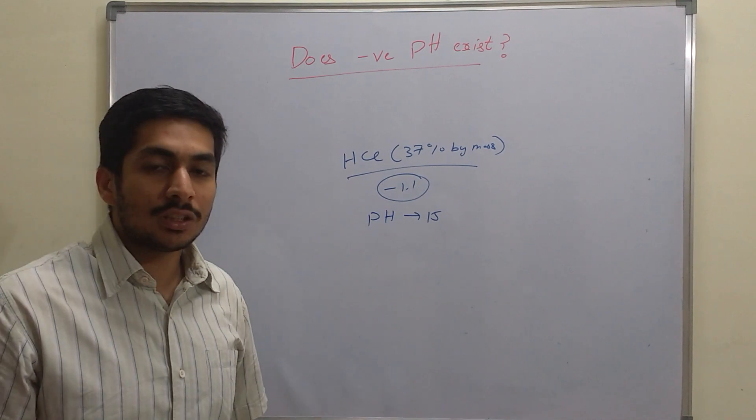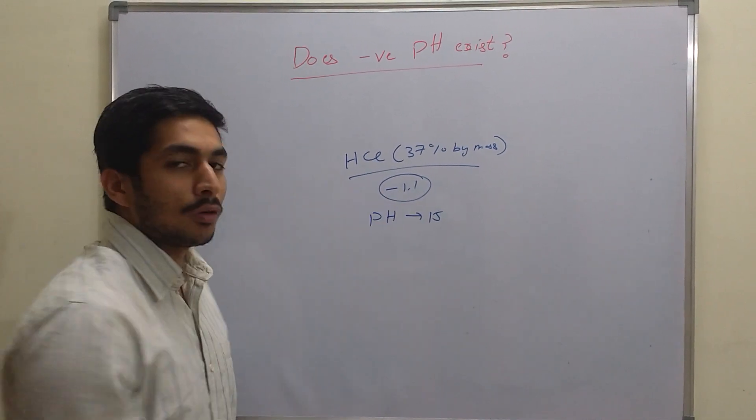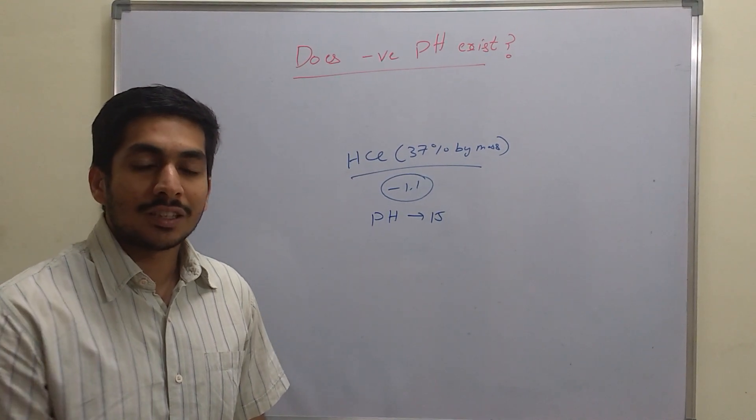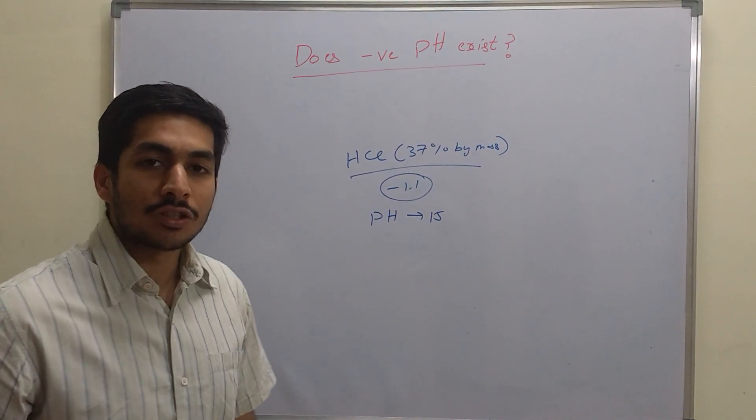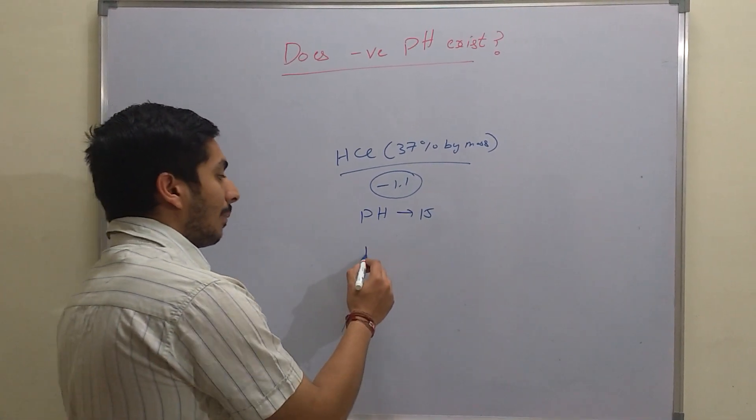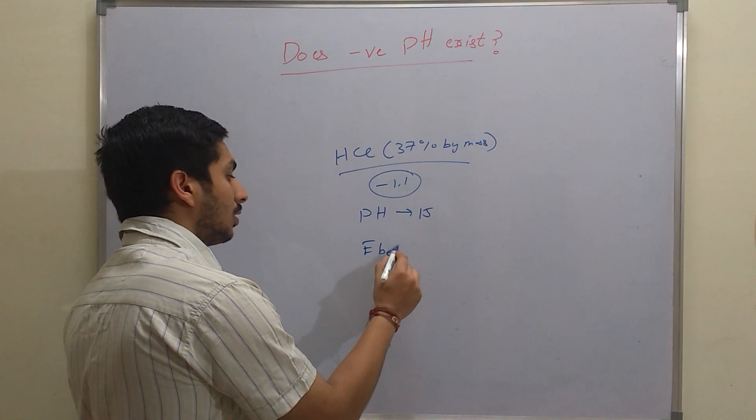Experimentally, pH lower than minus 1.1 has also been found. In fact, it is found in naturally occurring waters. There's a hot spring in Ebeko volcano.